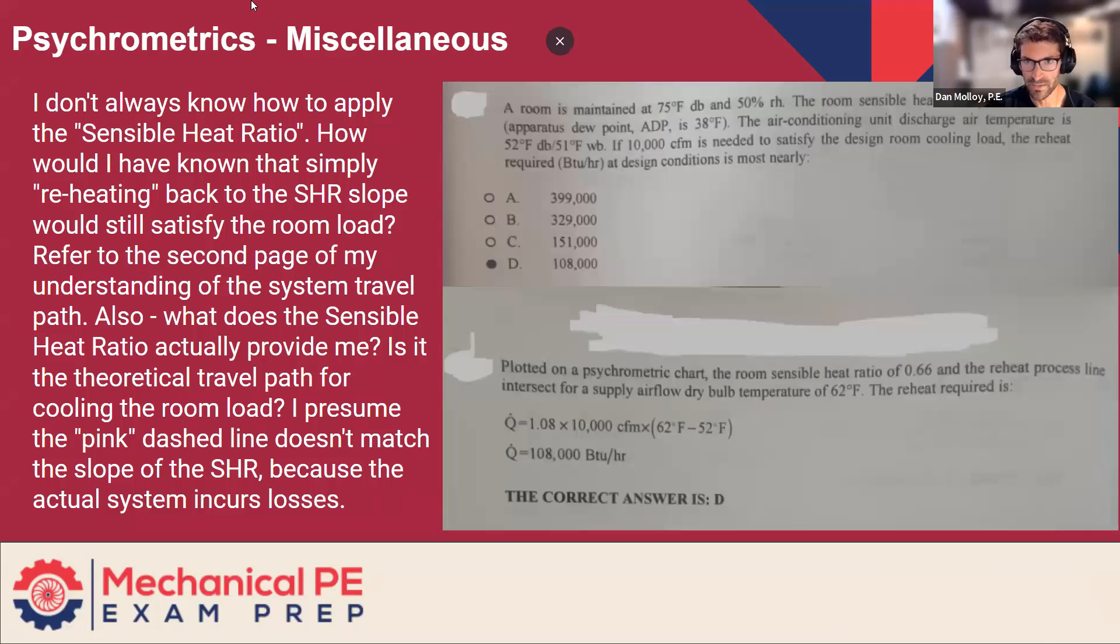So psychrometrics miscellaneous. I don't always know how to apply the sensible heat ratio. How would I have known that simply reheating back to the SHR slope would still satisfy the room load? Refer to the second page of my understanding of the system travel path. Also, what does the sensible heat ratio actually provide me? Is it the theoretical travel path for cooling the room load? I presume the pink dashed line doesn't match the slope of the SHR because the actual system incurs losses.